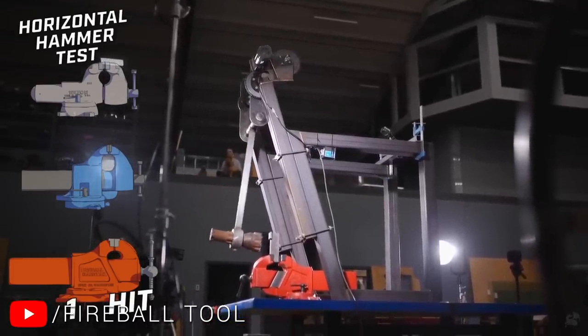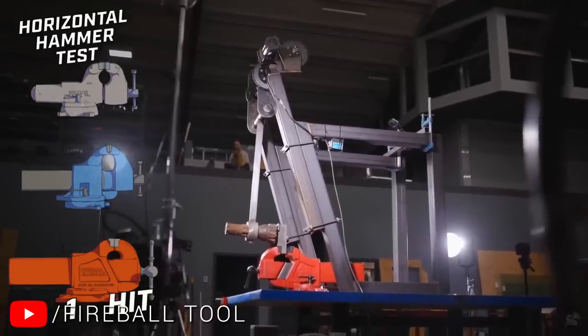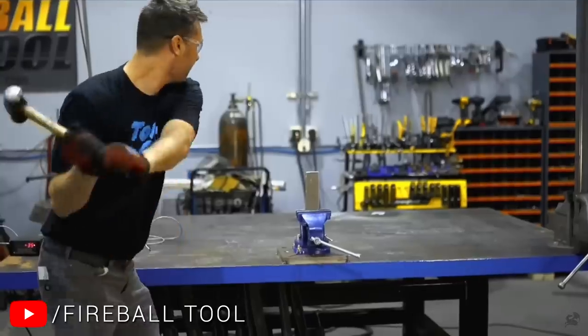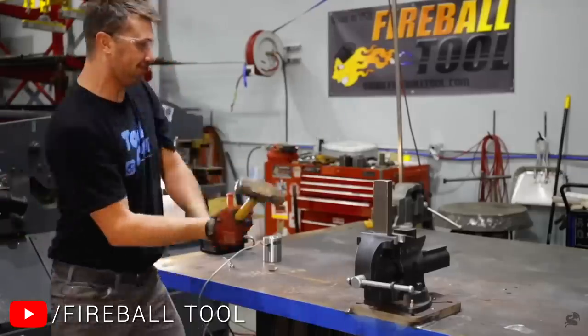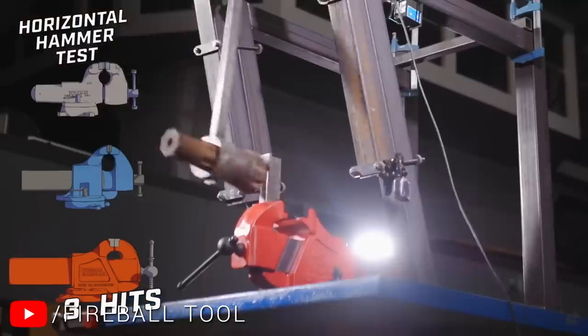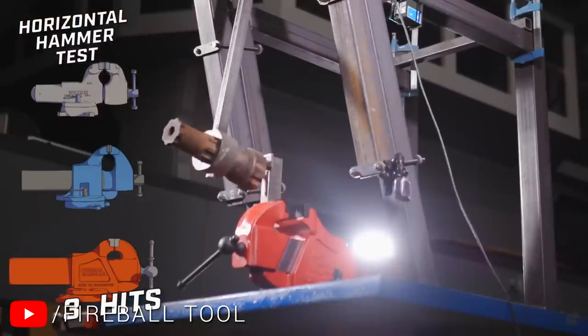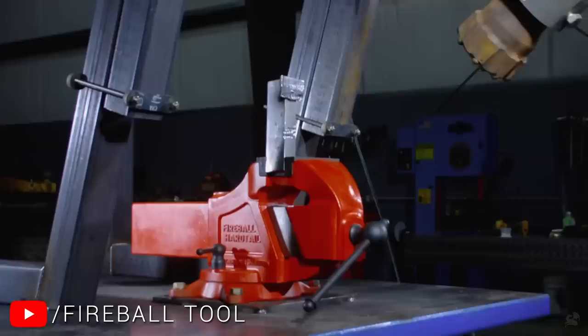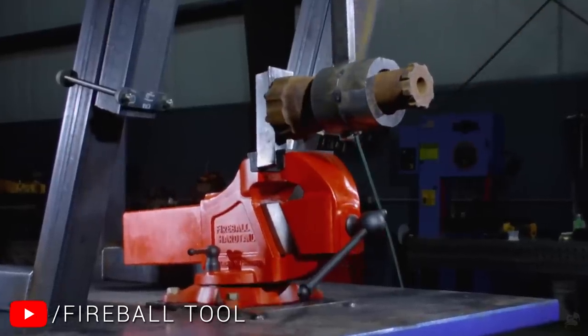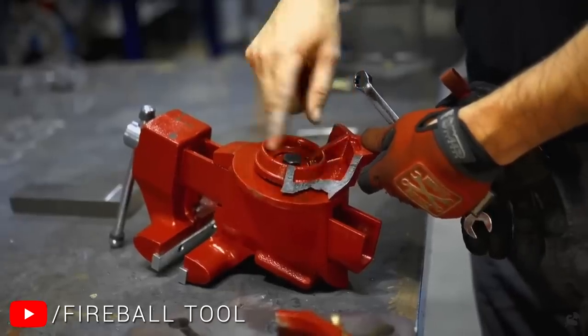The beauty here is that this system is entirely repeatable. Whereas the force will naturally vary as you bash something by hand, particularly as you get tired, this machine will deliver the same blow in the same place, over and over, allowing you to count the amount of blows until something fails, and this means you can compare the impact strength of various objects.